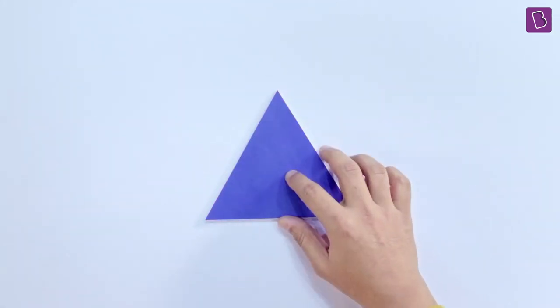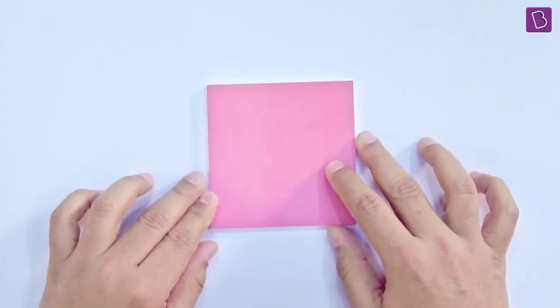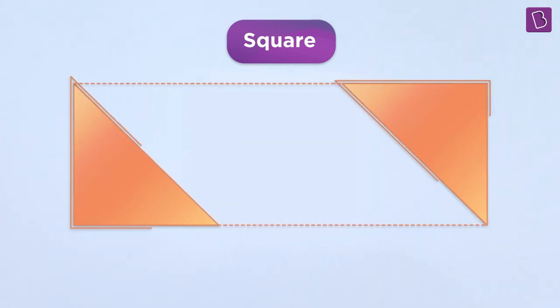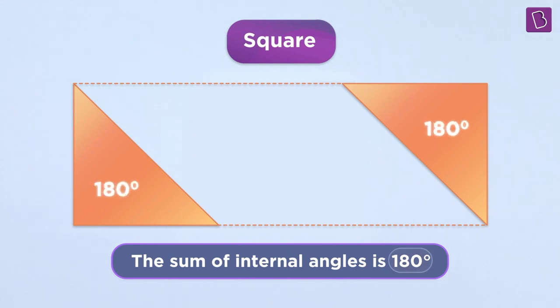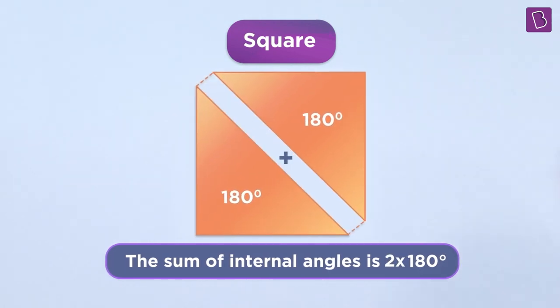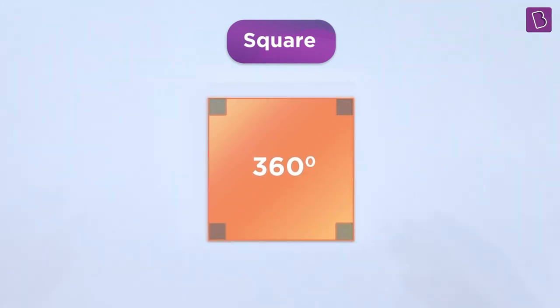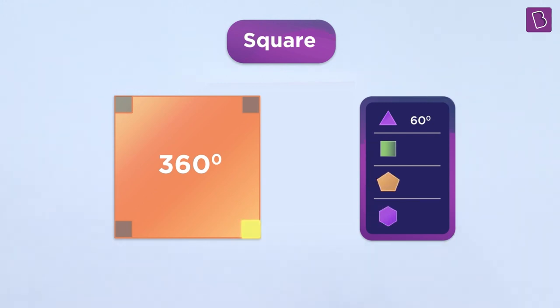Now, in the case of four-sided figure, like our square, check this out. This square can actually be thought of as two triangles. The sum of interior angles in a triangle is 180 degrees. In a square is twice of 180 degrees, which is 360 degrees. Four sides, four angles, 360 degrees and one-fourth of that is 90 degrees.